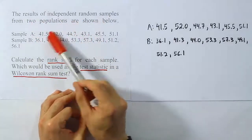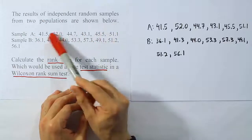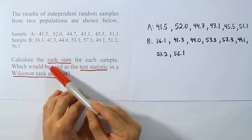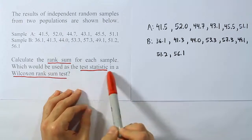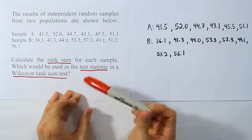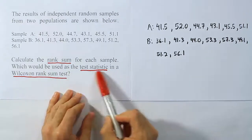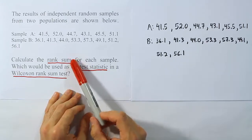The results of independent random samples from two populations are shown below. We have sample A and sample B. They want us to calculate the rank sum for each sample, and they ask which would be used as the test statistic in a Wilcoxon rank sum test. In order to answer this question, we're going to have to do the rank sum anyways for each sample.